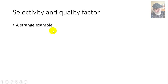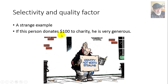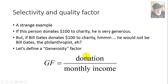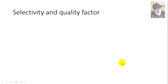Let's define selectivity and quality factor using an analogy. If someone donates $100 to charity, it may mean extreme generosity — but if it's Bill Gates donating $100, that would be very little. It's not the absolute value of the donation but where it comes from. We define a generosity factor: the donation divided by the donor's monthly income. Similarly, we define the quality factor of a filter.